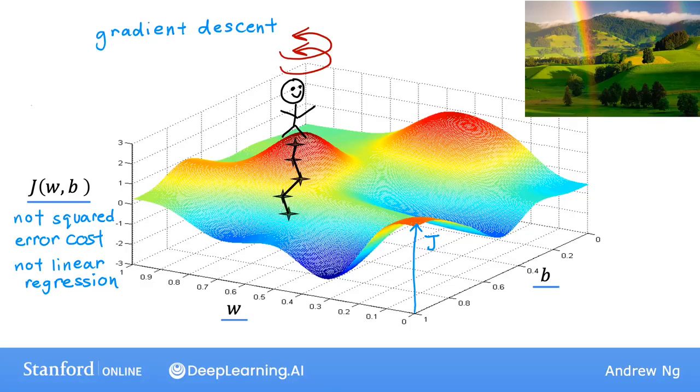And if you do that and take another step, you end up moving a bit in that direction and you can keep going. From this new point, you can again look around and decide what direction would take you downhill most quickly. Take another step, another step, and so on, until you find yourself at the bottom of this valley at this local minimum right here. Remember, what you just did was go through multiple steps of gradient descent. It turns out gradient descent has an interesting property.